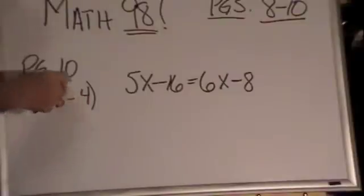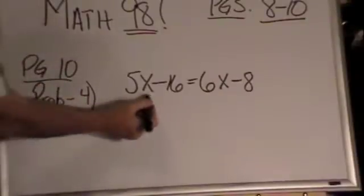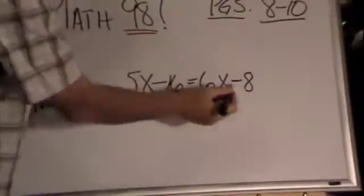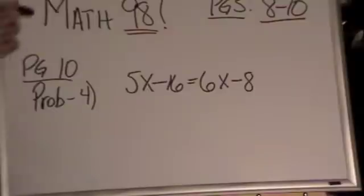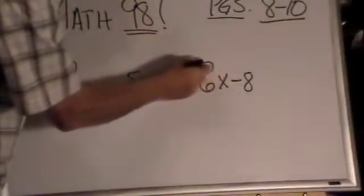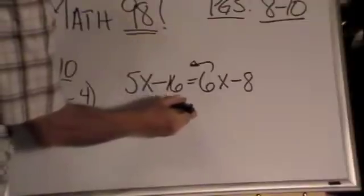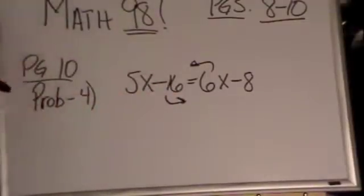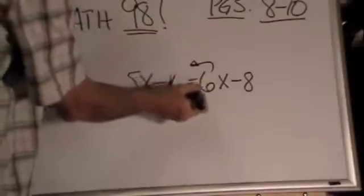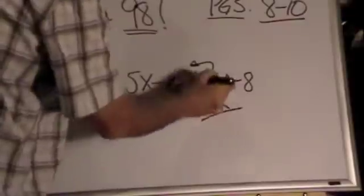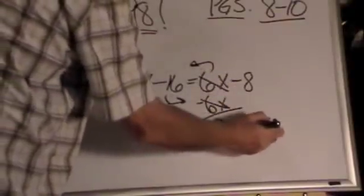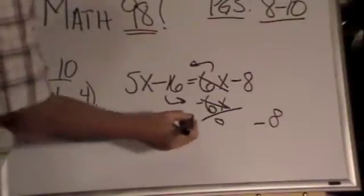Number 10, problem 4 on page 10. You've got a 5x minus 16 equals 6x minus 8. Basically, I'm going to move the x this direction. I'm going to move that one that direction. It's a plus 6x. Minus 6x. Check. Check. Zero. I've got my minus 8 left there. That's just to keep you thinking clearly about making it different.